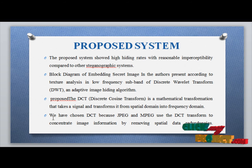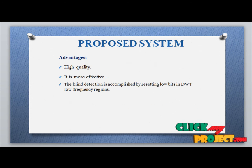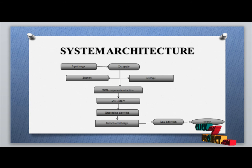DCT mathematical representation transforms the spatial domain, choosing JPEG and other image formats, removing the spatial data. In proposed system: high quality, more effective. Blind detection accomplished by resetting low bits of DWT in low frequency region. This is the main circuit diagram of our process.